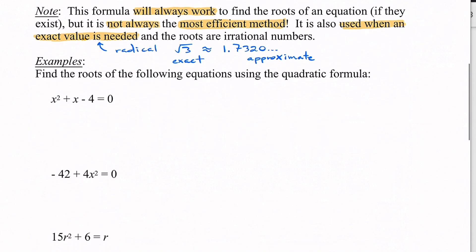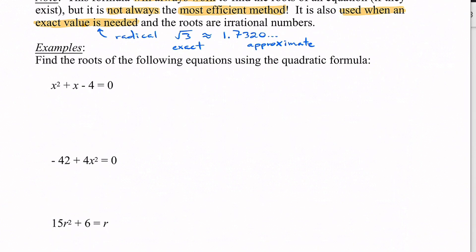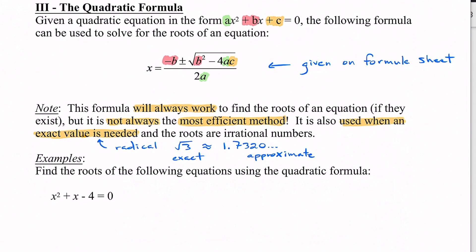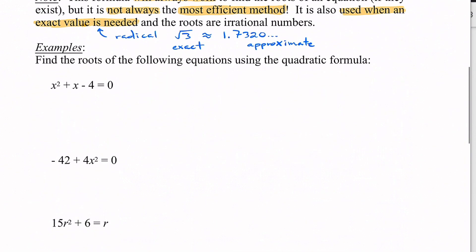Looking at our first example: find the roots of the following equations using the quadratic formula. To use it, I need the equation in the form equals zero. These first two are already in equals zero form, so all I need to do is find a, b, and c. If there's no number in front of a variable, there's a hidden one. So a is one, b is also one, and c is negative four.